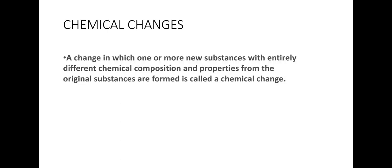When a new substance possessing different properties is formed after a change, it is called a chemical change. For example, when a cake is baked, a change occurs in its composition and a new substance is formed. Therefore, it is a chemical change.